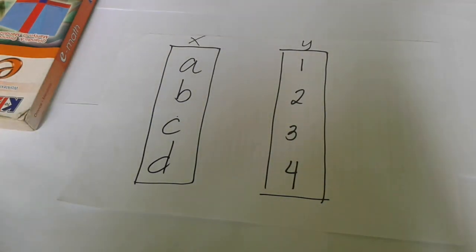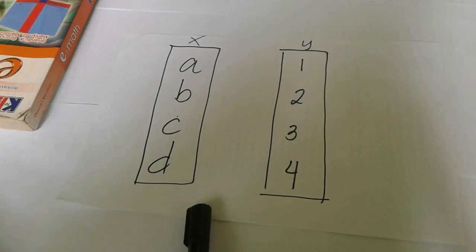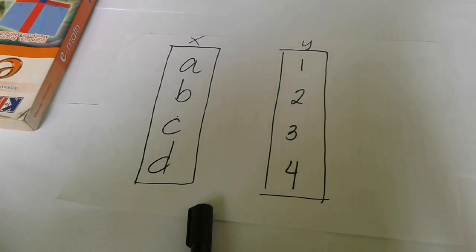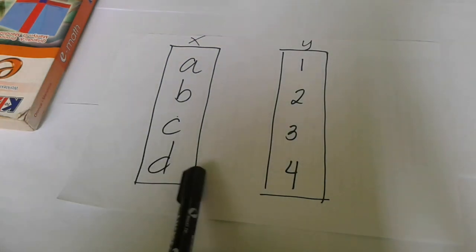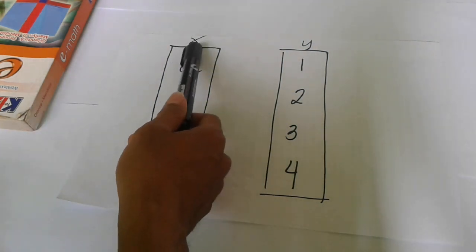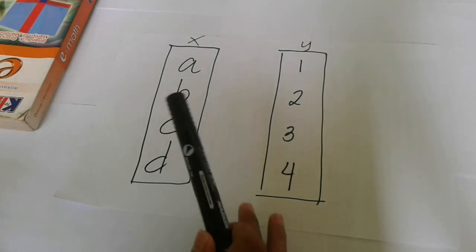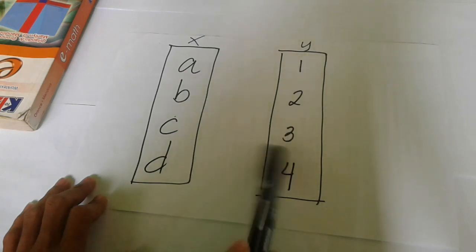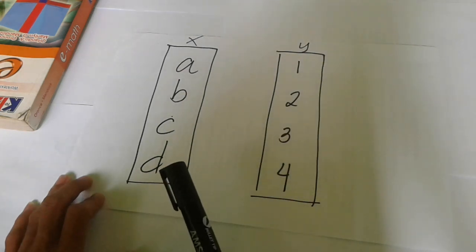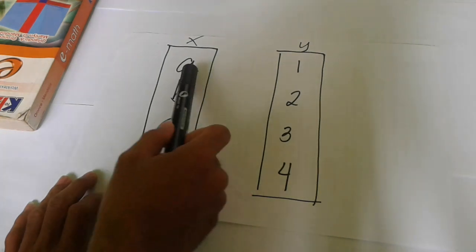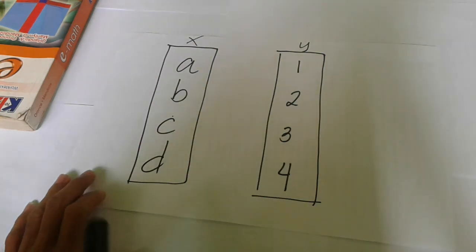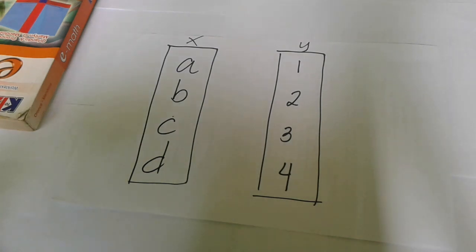We are into the concept or the definition of the first type of relation, which is the one-to-one relation. A relation from A to B is said to be a one-to-one relation if no two elements of A have the same image in B. In short, the concept is that there should be no repeating elements in A corresponding to the codomain or Y.